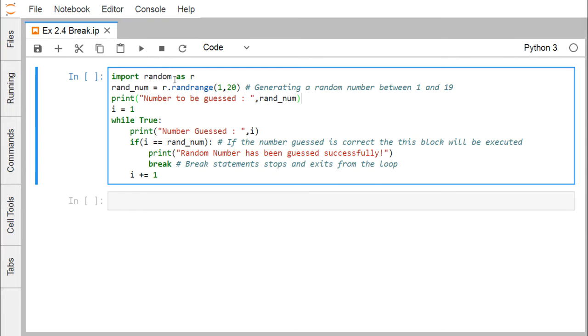Import random as R. R is the alias. We are importing the random module and random.randint will generate a random number between one to nineteen because 20 will be the exclusive limit and one will be the inclusive limit. Then i equals 1, while True, that means we are falling in an infinite loop.